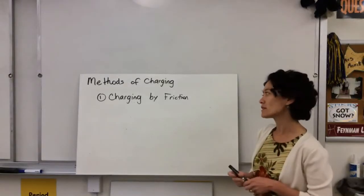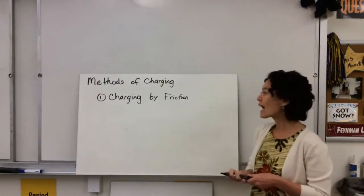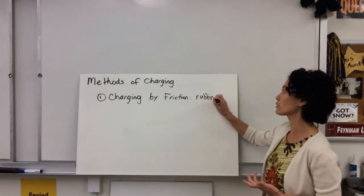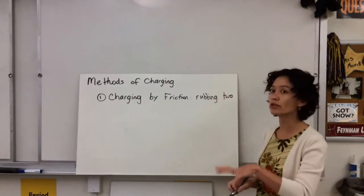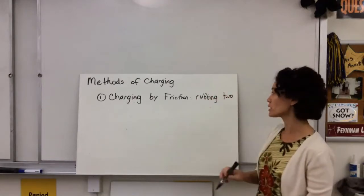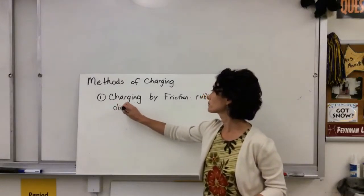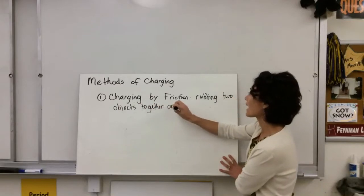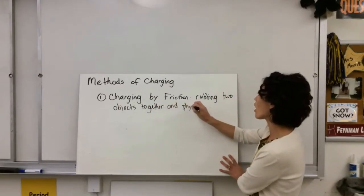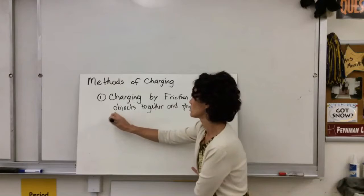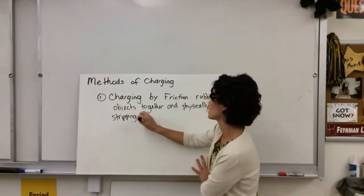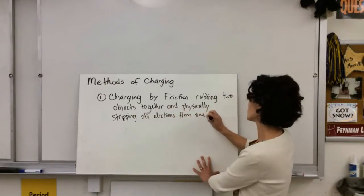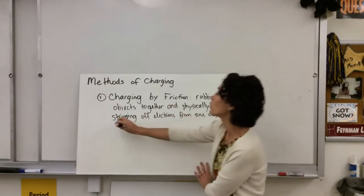There are three methods of charging. The first one is charging by friction. This is basically the idea of rubbing two objects together and physically stripping off electrons from one of the objects and putting them on the other.